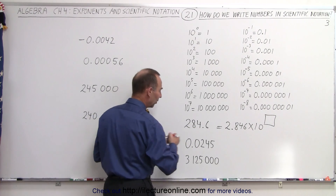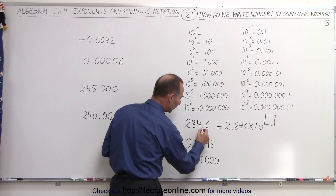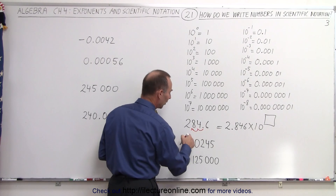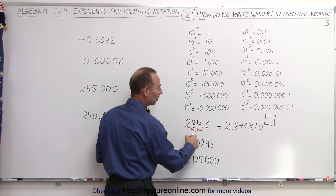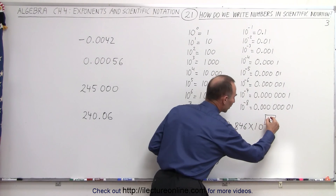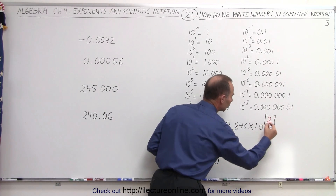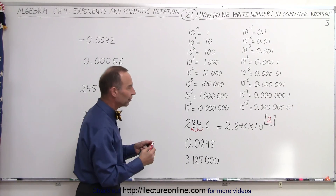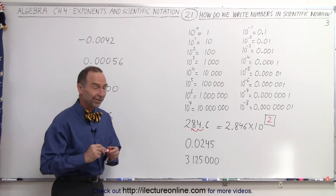So in this case, we need to move the decimal point from here two spots, which means we're going to put the number 2 there. So it's 2.846 times 10 to the second.